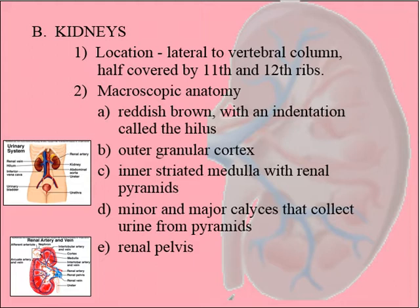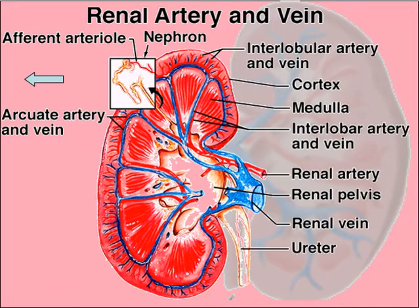The kidneys are partially covered by the 11th and 12th ribs, and they are certainly kidney bean shaped and reddish-brown. There's an indentation in the kidneys called the hilus — that's where the ureter leaves and the renal artery and vein exit and enter.